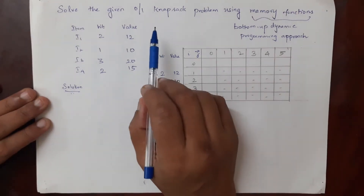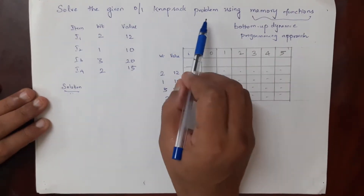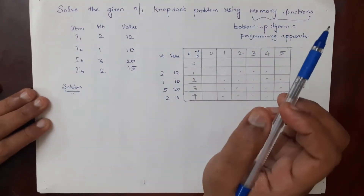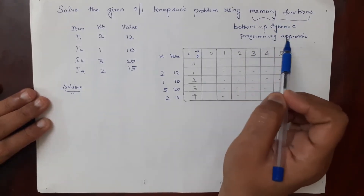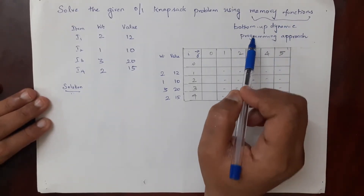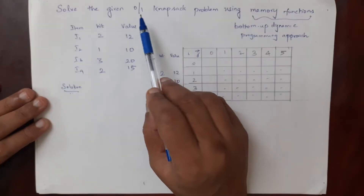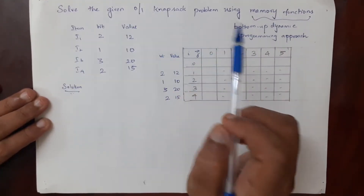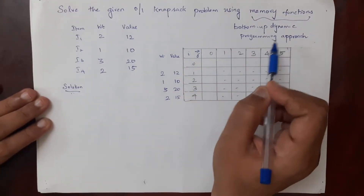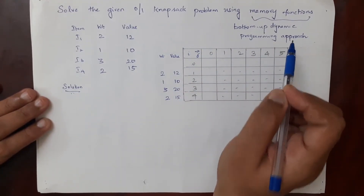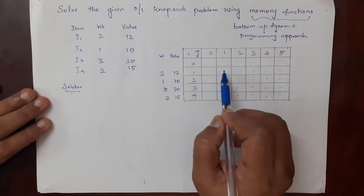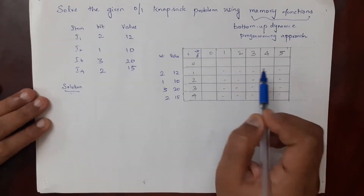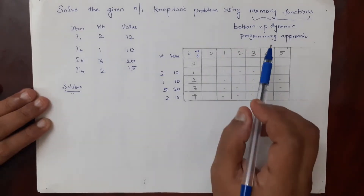Hello students. In this video we'll see how to solve a 0/1 knapsack problem using memory functions. Memory functions is nothing but a bottom-up dynamic programming approach. In the previous video we solved this same 0/1 knapsack problem using the top-down dynamic programming approach, which starts from the first row or the first column and fills the whole table.